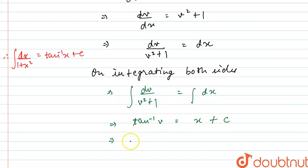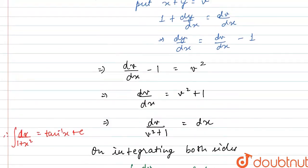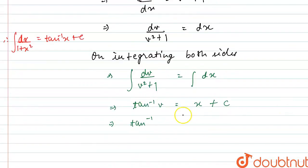Now, put the value of v here. This will become tan inverse of v, which we assumed as x plus y. So, tan inverse of x plus y equals x plus c.